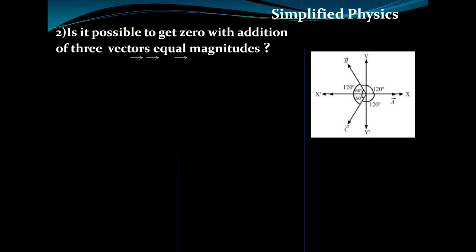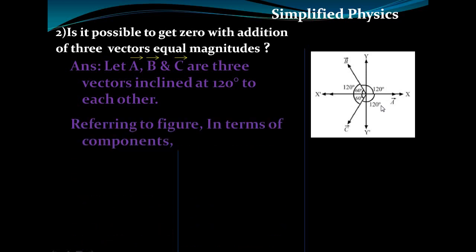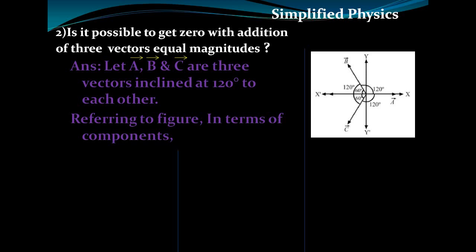Now let's go to the second question: is it possible to get zero with the addition of three vectors of equal magnitude? Let's suppose A, B, C are three vectors which are inclined at 120° to each other, as indicated in the figure.